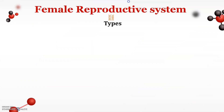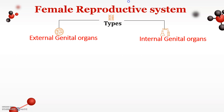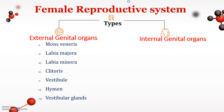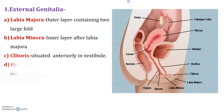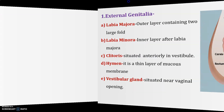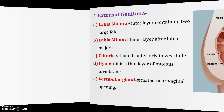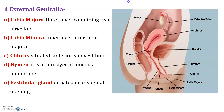What are the different parts of the female reproductive system? It is divided into external and internal genital organs. The external organs contain seven different parts. Please pause this video and write in your notebook for better understanding.